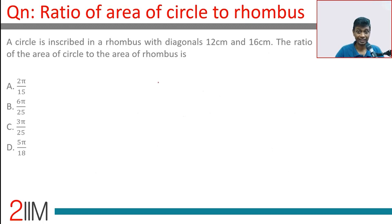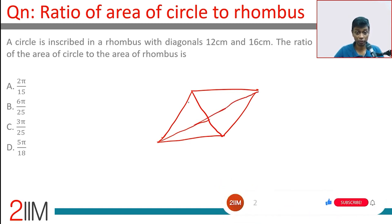A circle is inscribed in a rhombus with diagonals 12 and 16. Diagonals of a rhombus are perpendicular bisectors of each other, so this will be 6, 8, 8, 6, and the sides will be 10, 10, 10, 10.